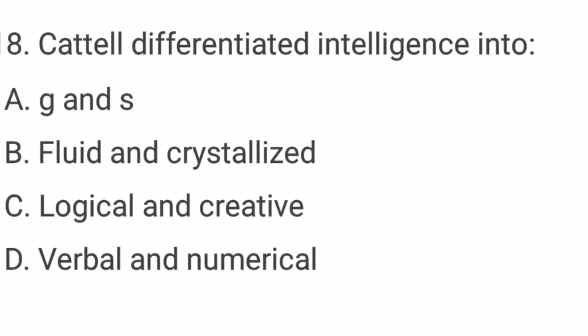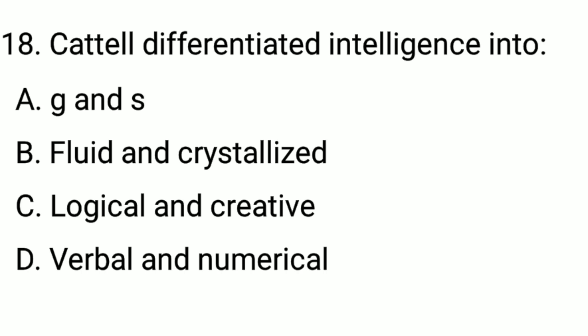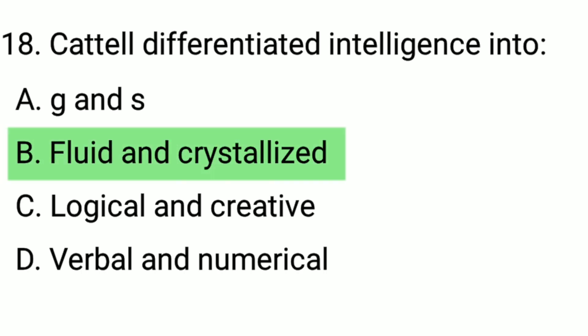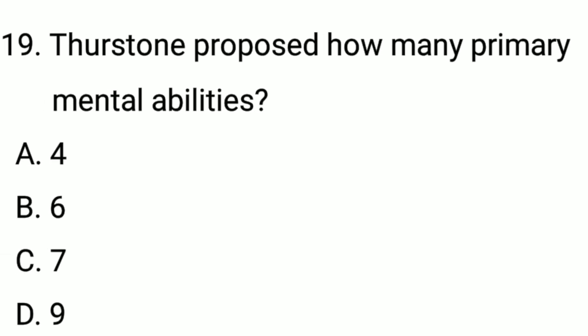Q18. Cattell differentiated intelligence into... The correct option is option B: fluid and crystallized. Q19. Thurston proposed how many primary mental abilities? The correct option is option C: 7.